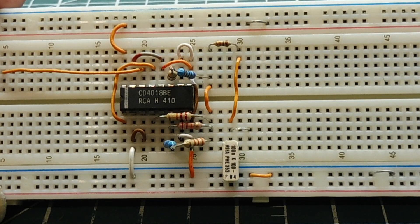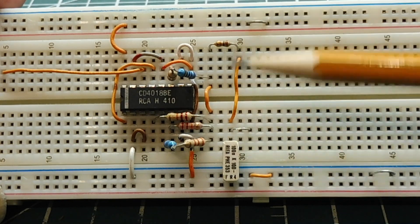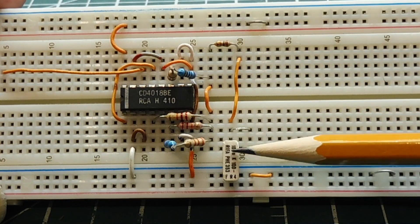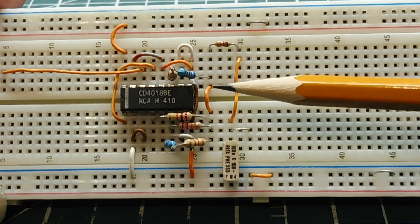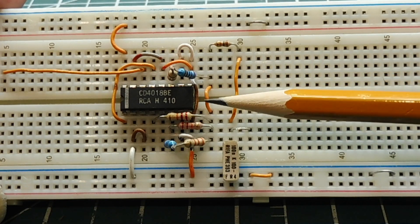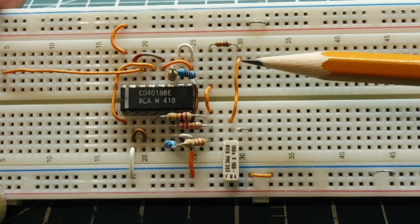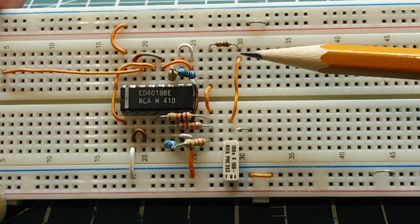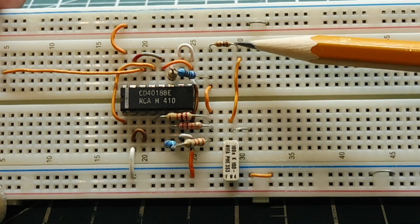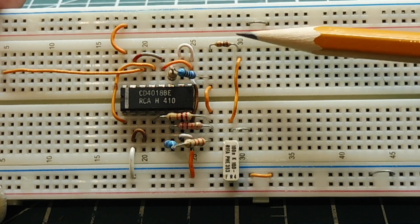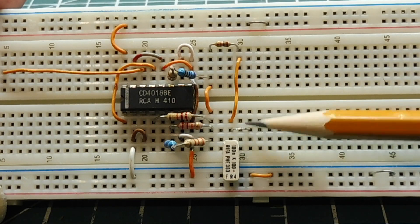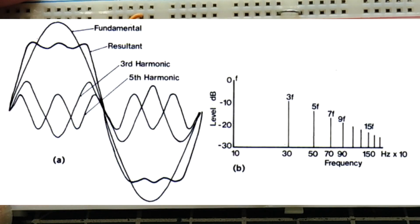So it will be a chunky sine wave, and then we could filter it using a simple RC filter. Basically it's a digital to analog converter using four resistors. We're going to build a chunky sine wave output, then filter out the harmonics with an RC filter, and we're going to get a sine wave output.